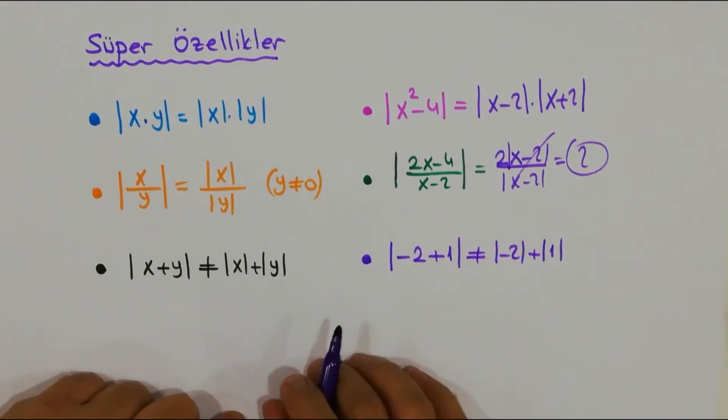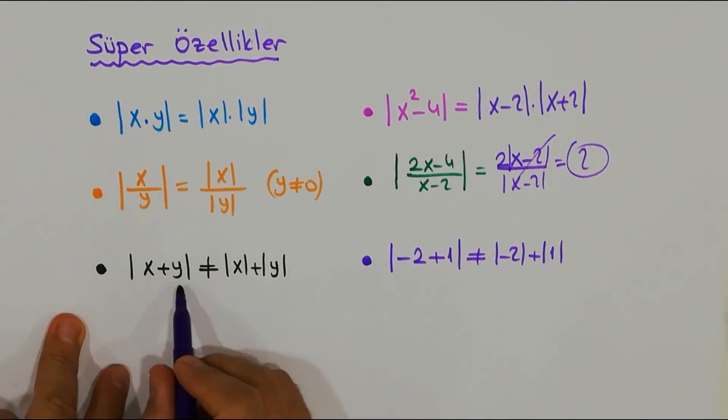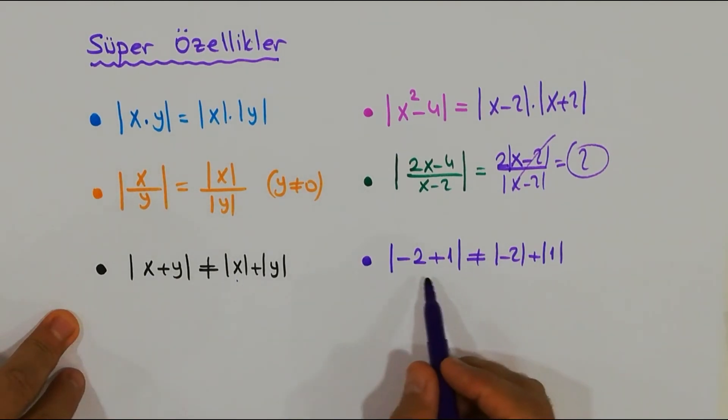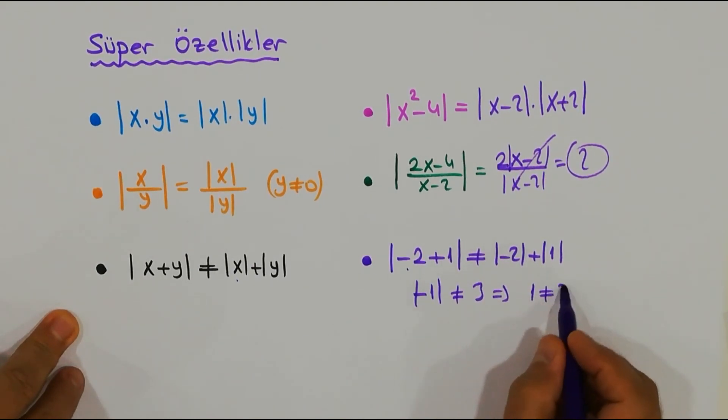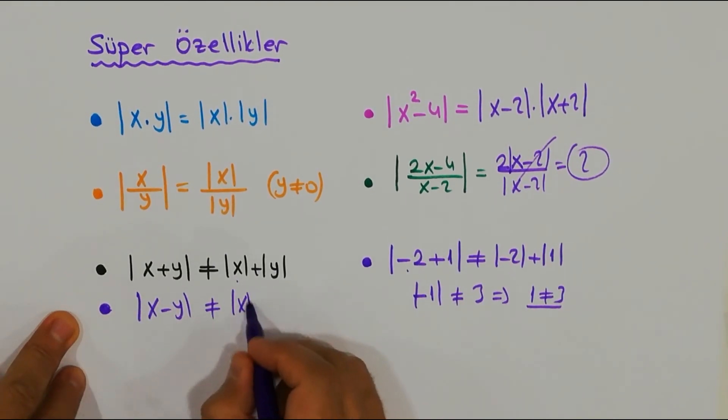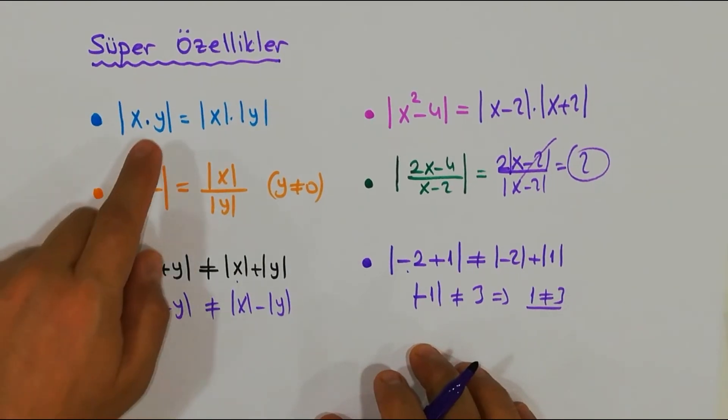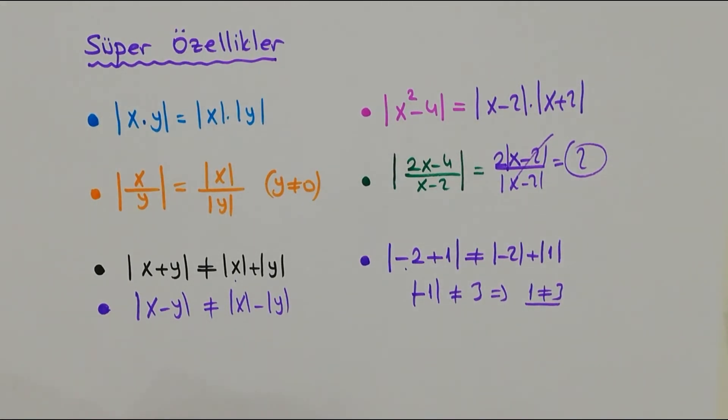Şimdi geldik son özelliğimize ve bununla alakalı son örneğimize ve dersimizi burada bitireceğiz arkadaşlar. Şimdi |x + y| ≠ |x| + |y| arkadaşlar. Örnek vereceğiz: Örneğin -2 ile 1'i topladığınız, burası ne oldu? -1. Burası ne oldu? |-2| = 2, bir daha ne yapar? 3. Yani sonuç olarak 1 ≠ 3. Bakın olmuyor. Peki ben bir tane daha ekleyeyim, şöyle olsaydı olur müydü acaba? Arkadaşlar kesinlikle hayır. Bu özelliklerimiz yani ayrı x'lerde ve y'lerde çarpma ve bölme işlemleri için geçerli. Bu özellikler asla asla toplama veya çıkarma işlemi için geçerli değil arkadaşlar. Evet sevgili dostlar.